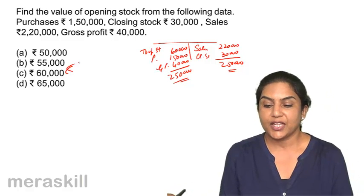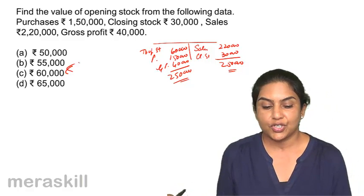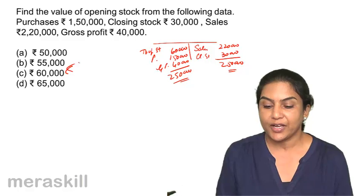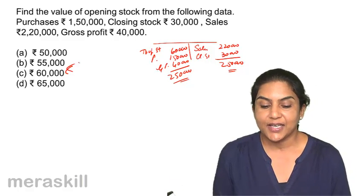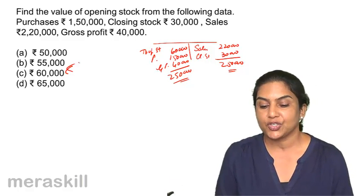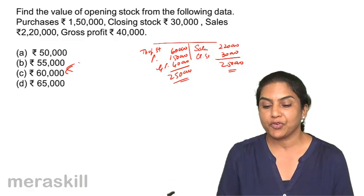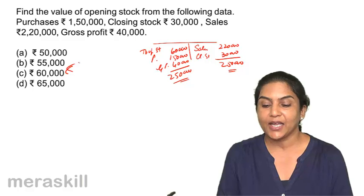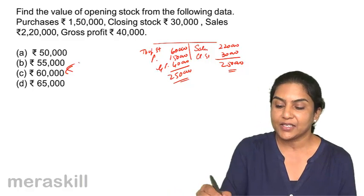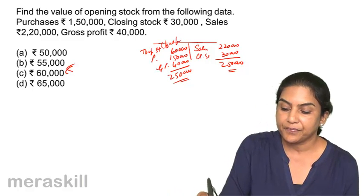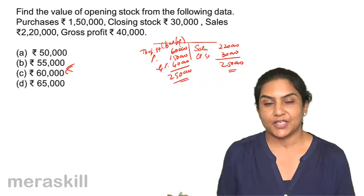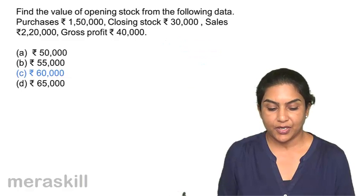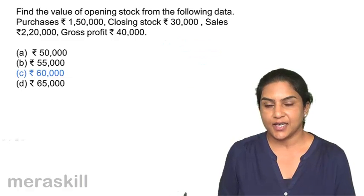Sales plus closing stock: 2,20,000 plus 30,000 equals 2,50,000. And on the other side we have purchases and gross profit, 1,90,000. Therefore, the balancing figure should be the opening stock of 60,000. Correct answer C, 60,000.